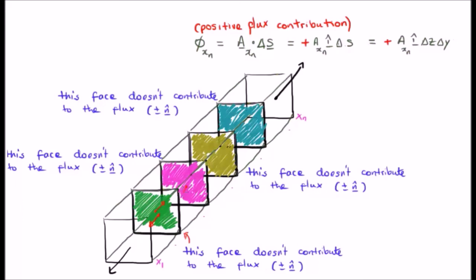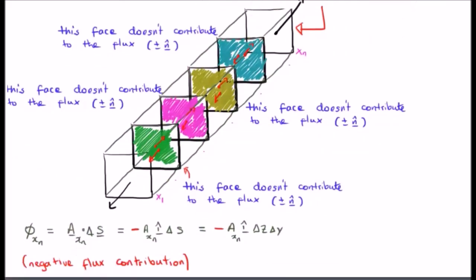Something similar is going to happen here and here, here and here. But when you get to the end of the tube, shall we say, or the end of our volume, there is no cancelling or cancellation to occur. And therefore there is a positive flux contribution here because of the positive i-hat, and there is a negative flux contribution here due to the negative i-hat.